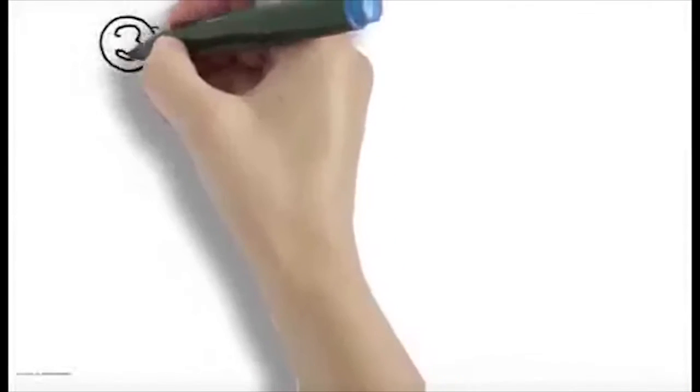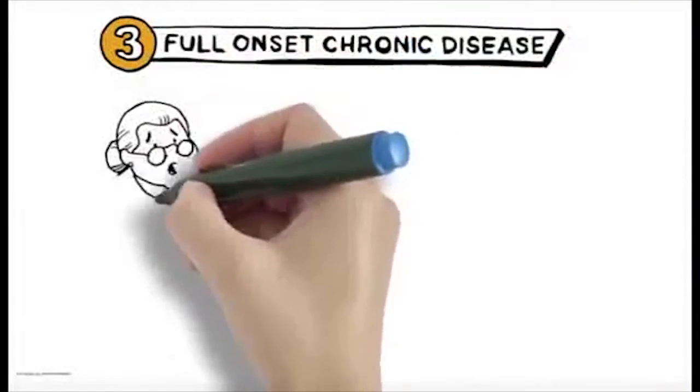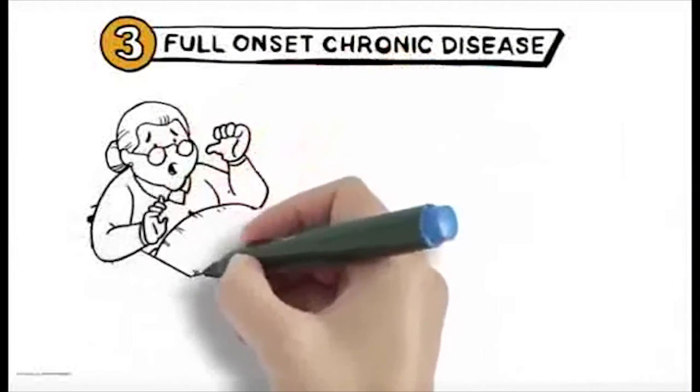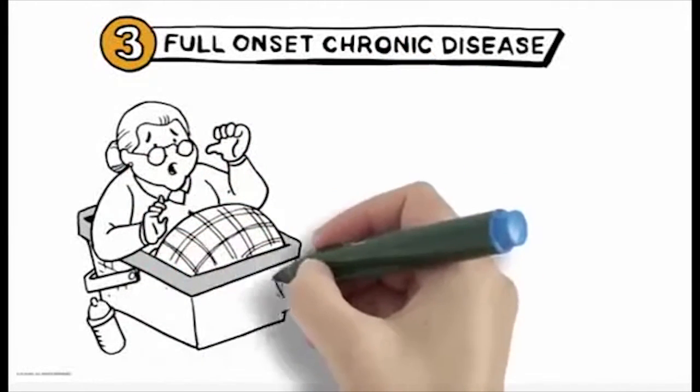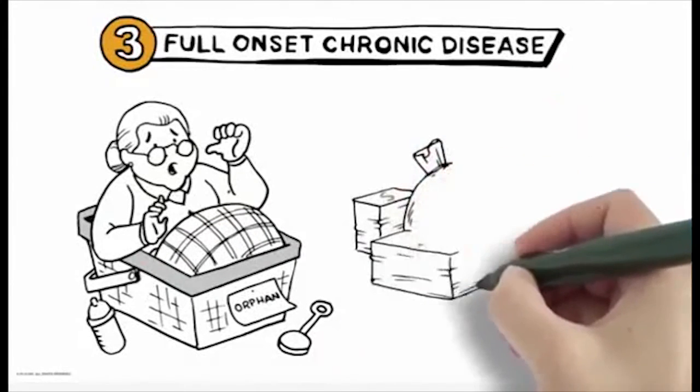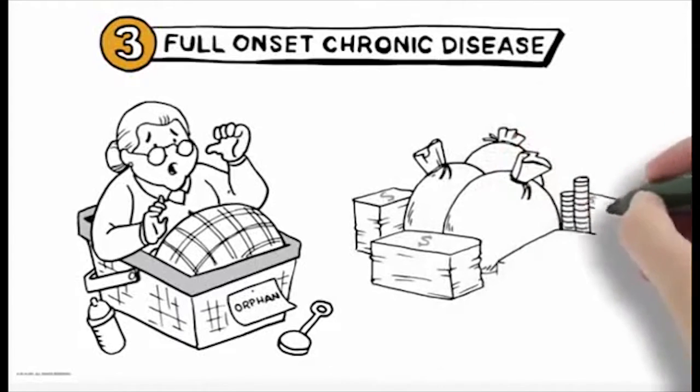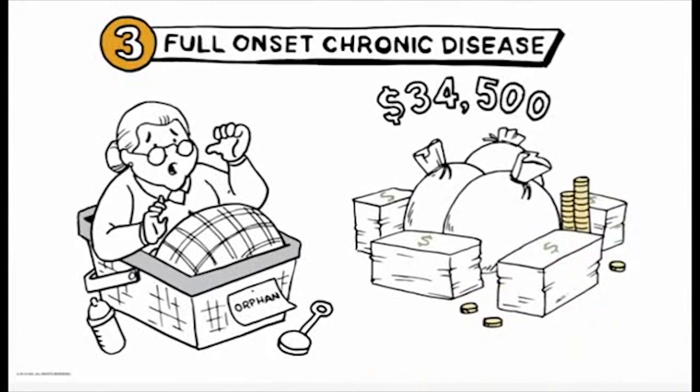Now the third population cohort is the subset of patients with full onset chronic disease, the orphan of traditional managed care. This group has been virtually unmanaged through 40 years of population health. These patients spend over eight times as much as the early onset cohort, averaging over $34,500 per person per year, with 20% to 30% savings opportunities if avoidable variation in treatment is reduced.